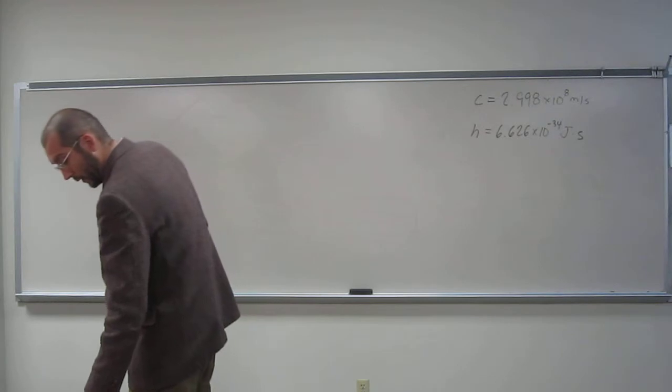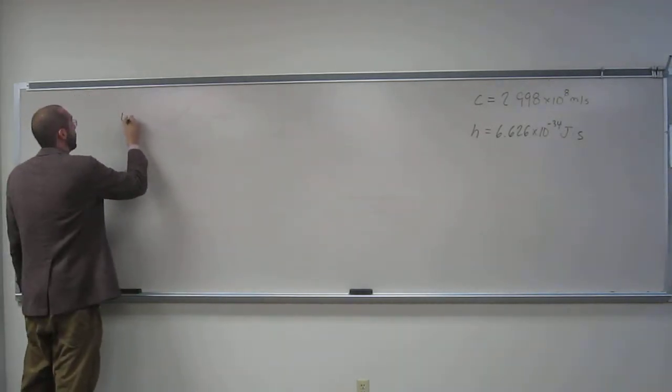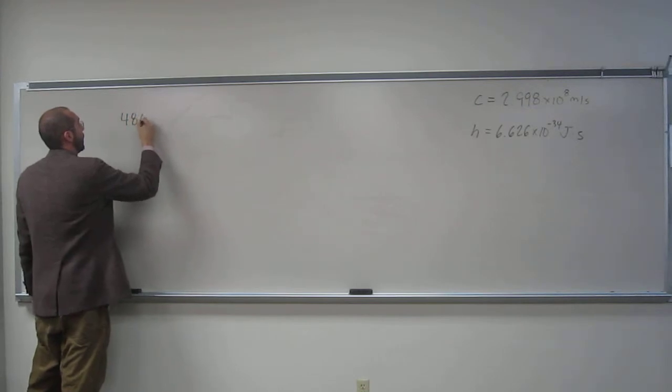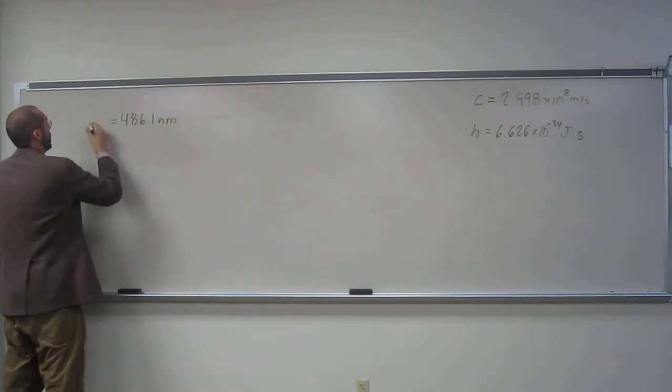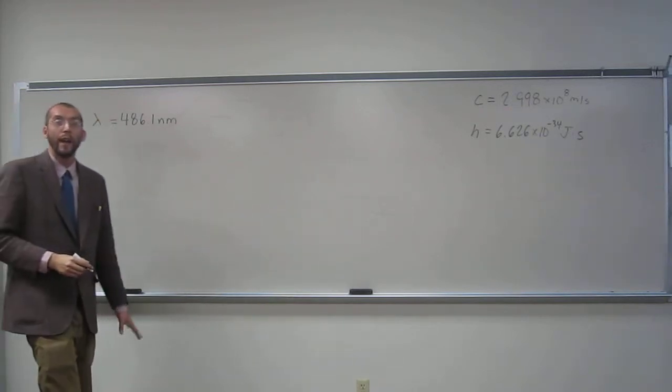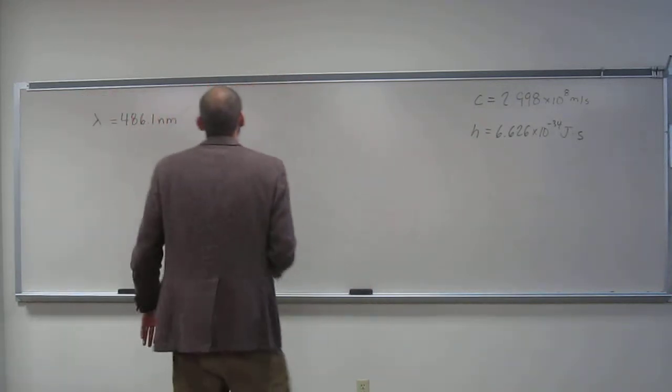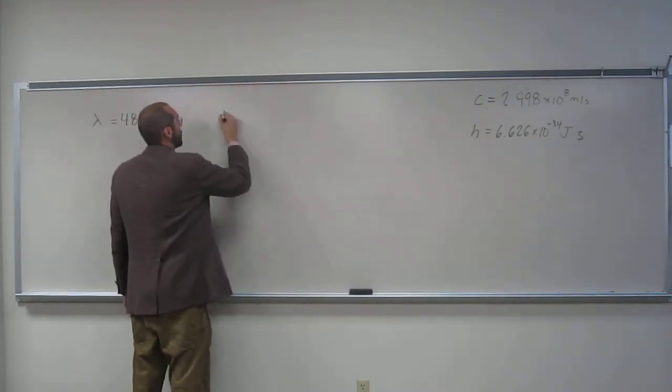So it said it was 486.1 nanometers. So that was the wavelength, right? So how do we do this? We have to use Planck's equation to do this. So remember Planck's equation?